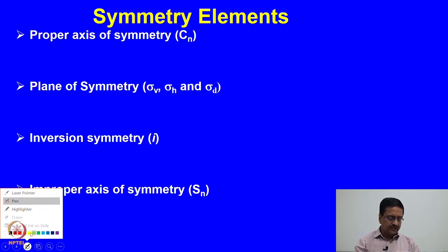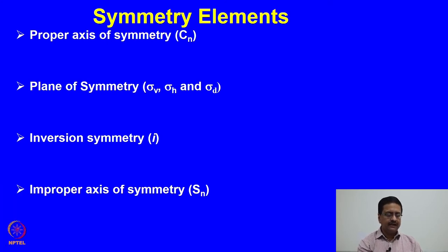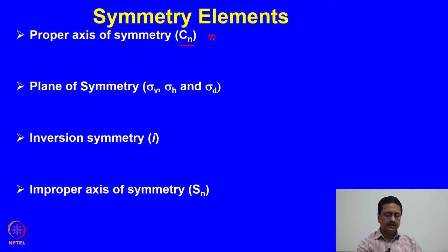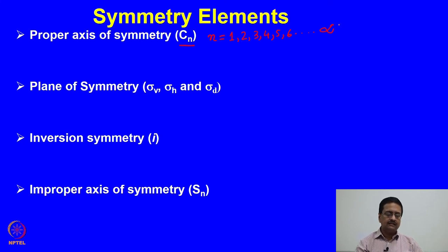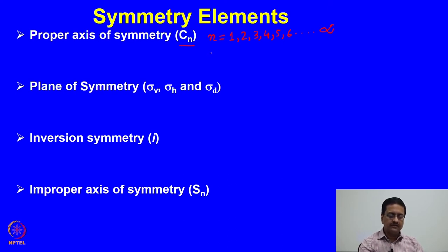The first symmetry element that one should look for is the proper axis of symmetry, written as Cn. Here the value of n can be anything from 1, 2, 3, 4, 5, 6, et cetera up to infinity — any integral value from 1 to infinity. It means that if you apply this n-fold rotational axis of symmetry, the molecule remains unaltered. If you rotate the molecule about this axis by 360 divided by n degrees, you will get the same molecule back.